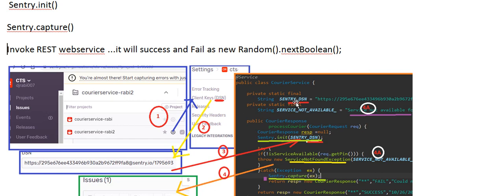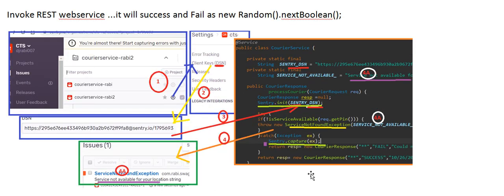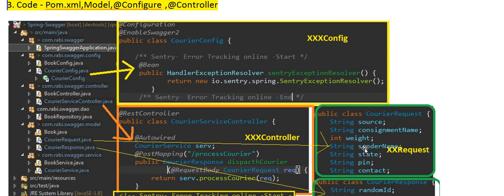I have put the DSN at the class level, but later I will put it in the properties file so you don't have to change the Java class — just change the properties file. After catching the exception, before returning a response, I call Sentry.captureEvent() and the error will appear in Sentry under Issues. I'm throwing a ServiceNotFoundException with the message 'Service not available for your location.'